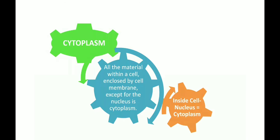We are going to start with the cytoplasm. What is cytoplasm? All the material which is present inside a cell enclosed by the cell membrane or the plasma membrane, except for the nucleus, is cytoplasm. To memorize the definition in the form of a formula: inside cell minus nucleus equals cytoplasm. The nucleus is not considered under the cytoplasm.